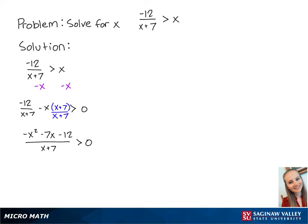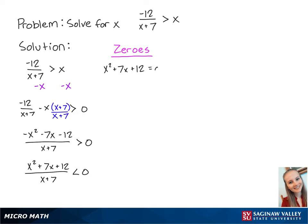Lastly, we can multiply both sides by negative 1 so that we have x squared plus 7x plus 12, all over x plus 7, is less than 0. Now we can find the values of x that make the left side of the inequality equal to 0 using the equation x squared plus 7x plus 12 equals 0. Solving this equation, we get x equals negative 3 or negative 4.